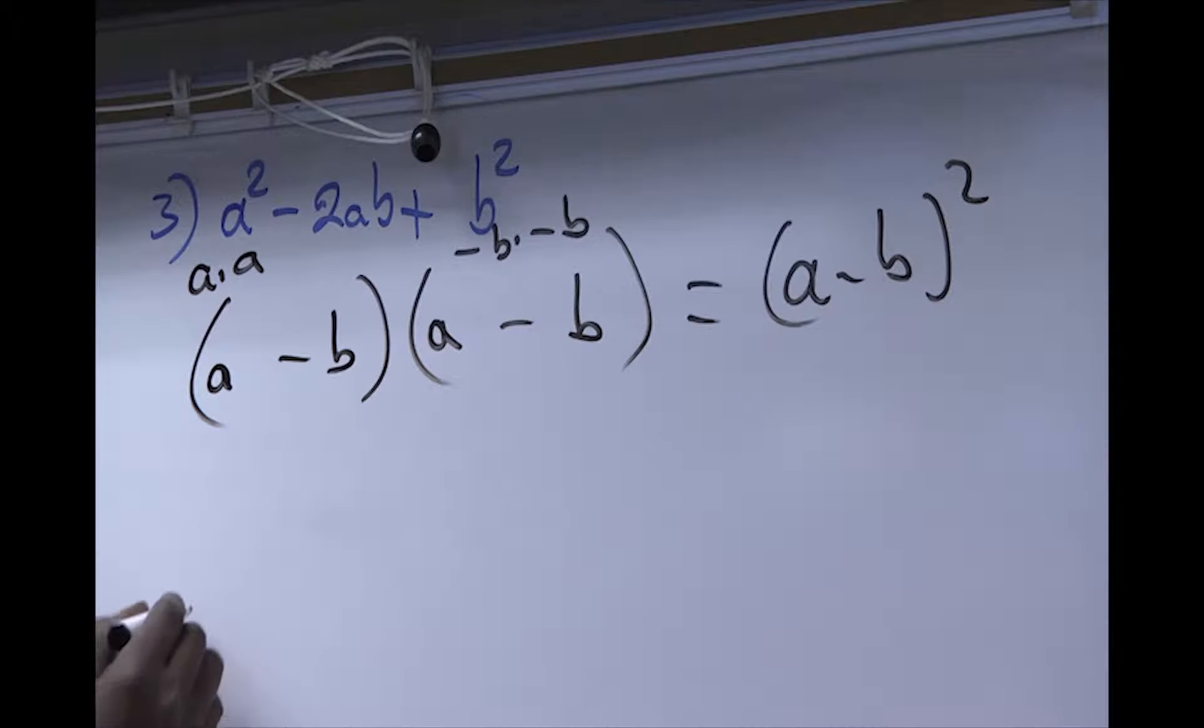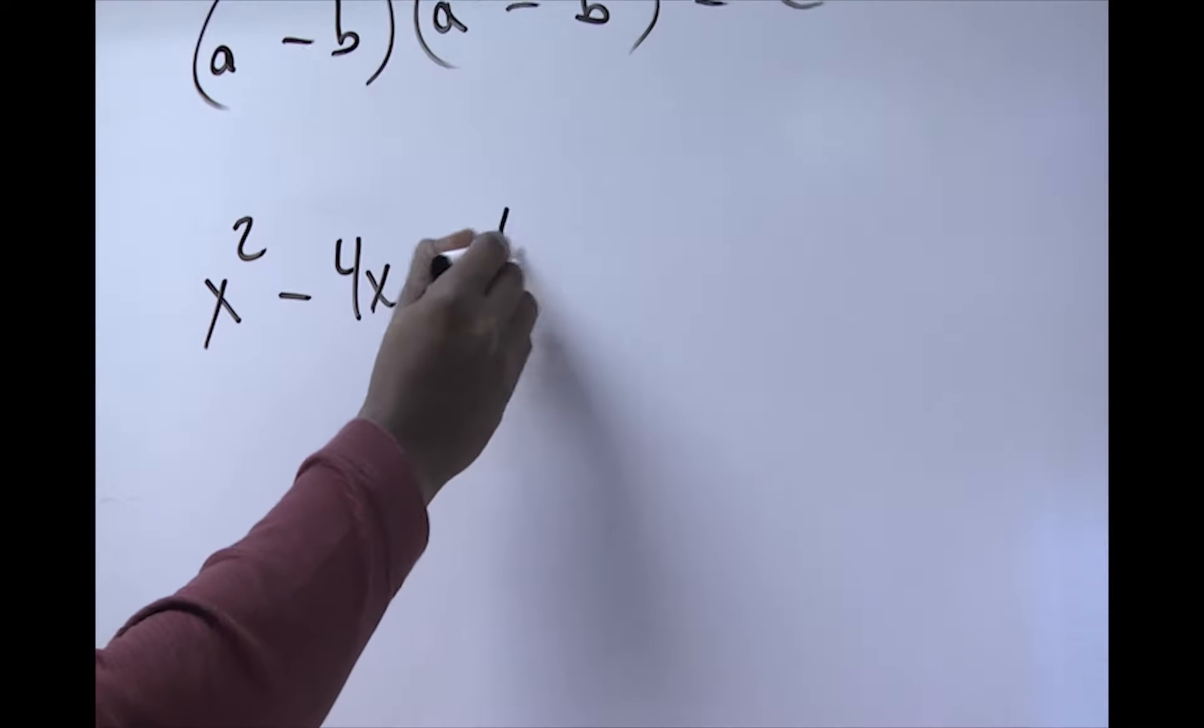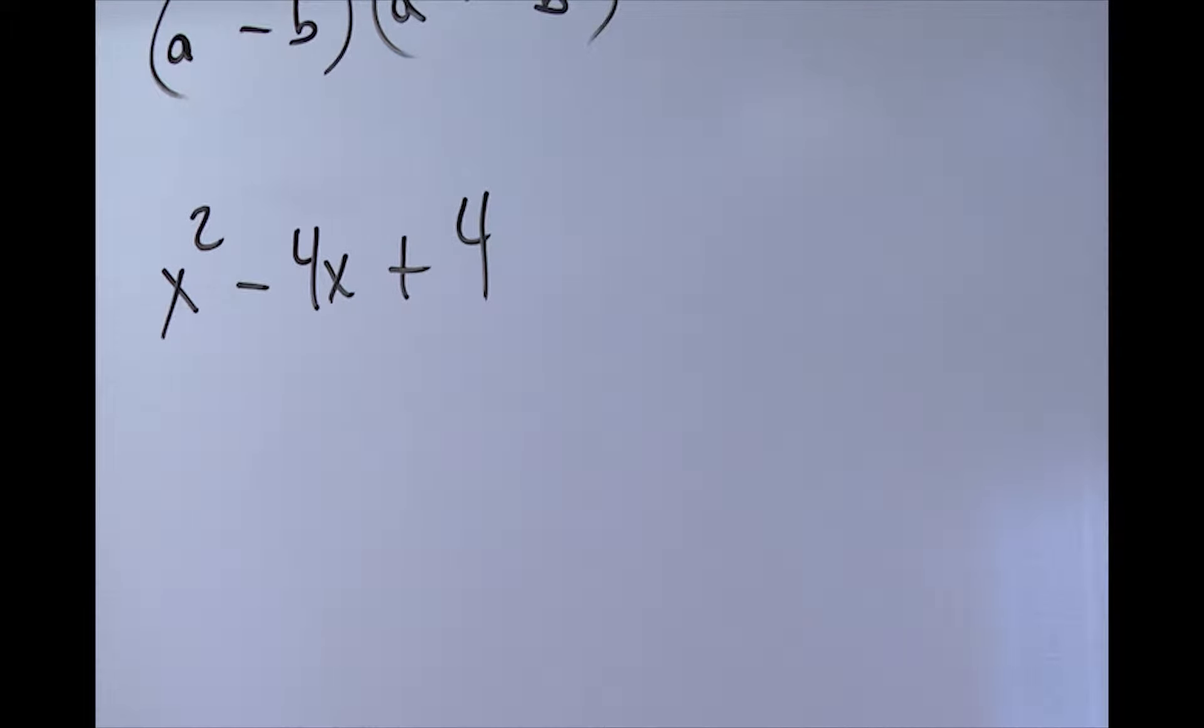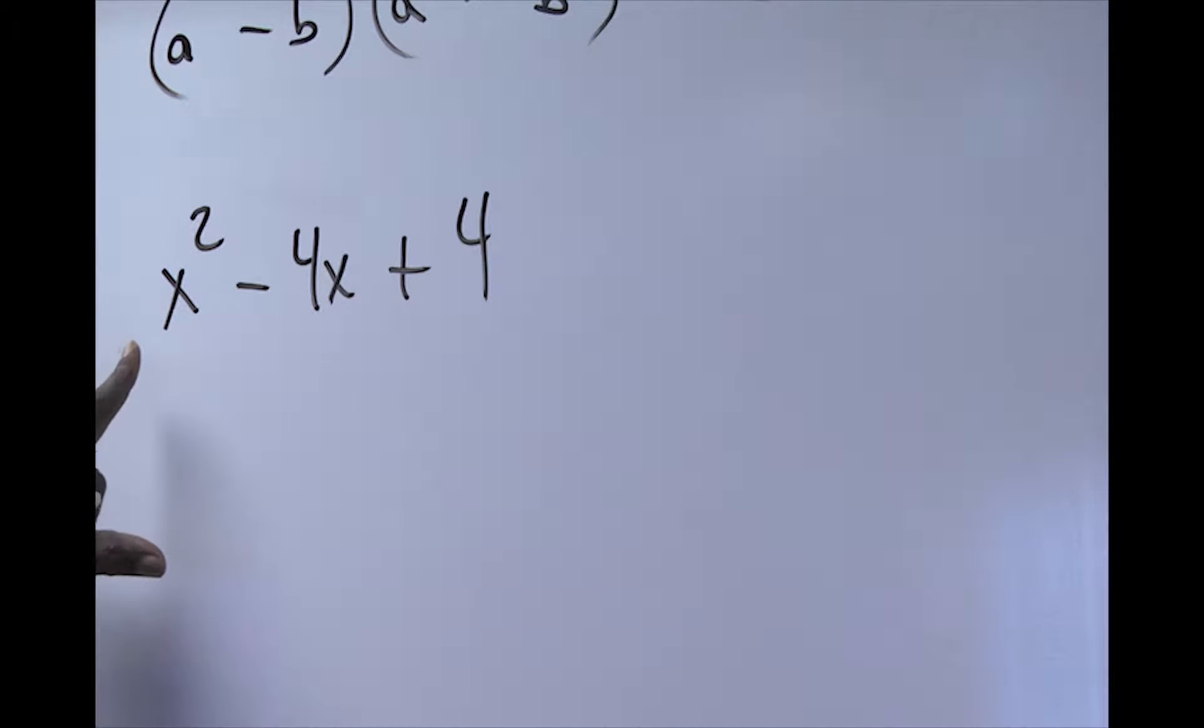Finally, if I gave you x² - 4x + 4 and ask you to factor, first of all, you check for that common factor. You never go away from those steps. Now, since you don't have a common factor,